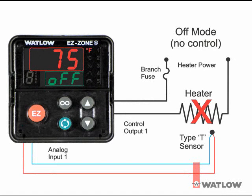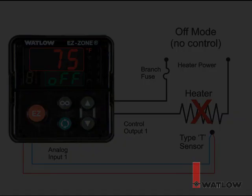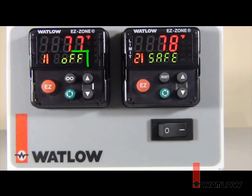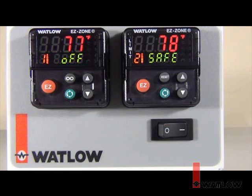In Off mode, the controller outputs are set to off, so there is no power applied to the load. The lower display indicates off in place of the active setpoint. The controller still updates the readings from the sensor if connected. The output indicators stay off to indicate the output activity.